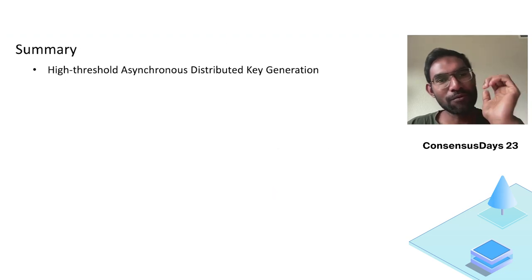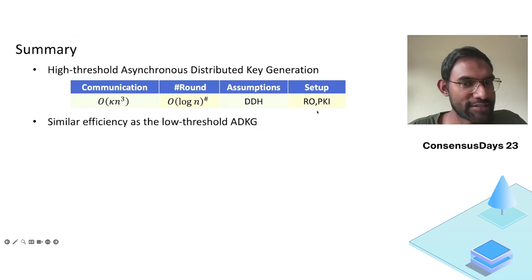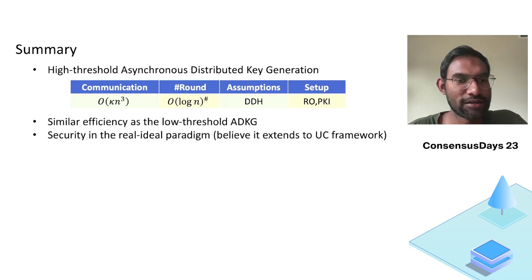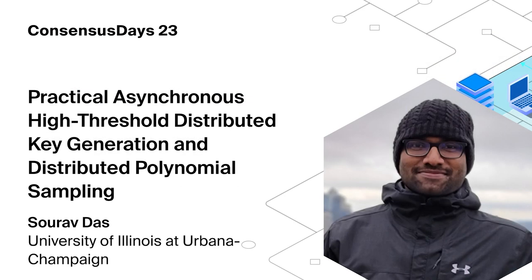So in summary, we give high threshold asynchronous distributed key generation that has asymptotic communication complexity of O(κn³), takes O(log n) rounds, and assumes DDH and random oracle and PKI. It has similar efficiency as low threshold ADKG, and we prove its security in the real and ideal paradigm, but we believe it extends to the UC framework. We have distributed polynomial sampling and it has many, many applications, and that's it. Thank you.